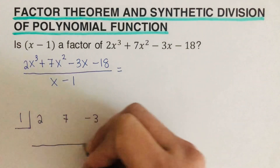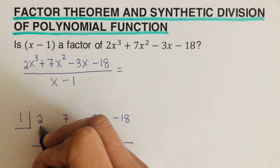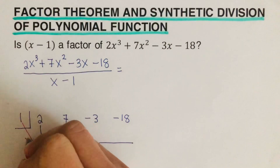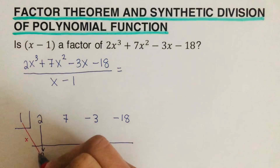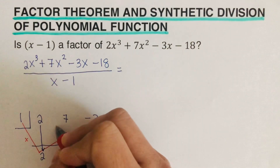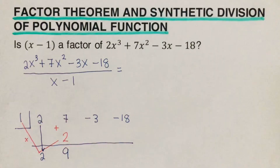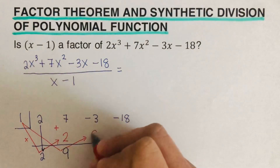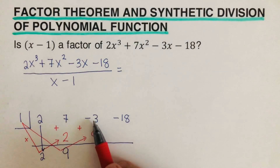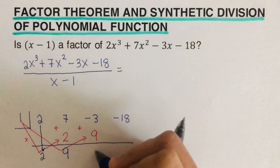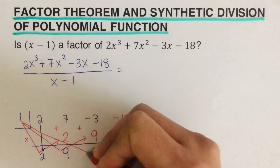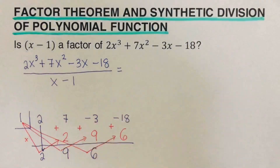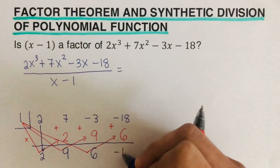Draw a bar, then bring down the 2. Next, multiply 1 times 2 to get 2, and write it under the 7. Add: 7 plus 2 is 9. Multiply 1 times 9 to get 9, write it under negative 3. Add: negative 3 plus 9 is positive 6. Multiply 1 times 6 to get 6, write it under negative 18. Add: negative 18 plus 6 is negative 12, which is the remainder.